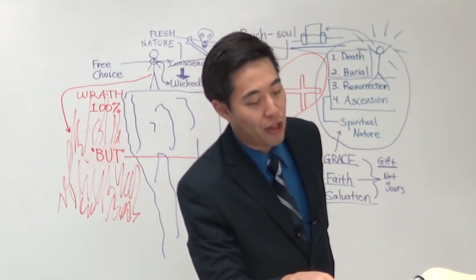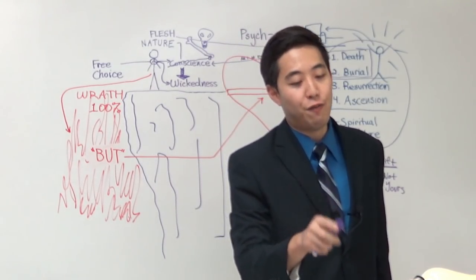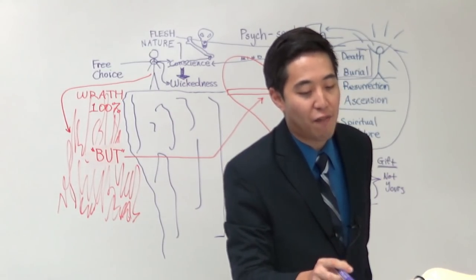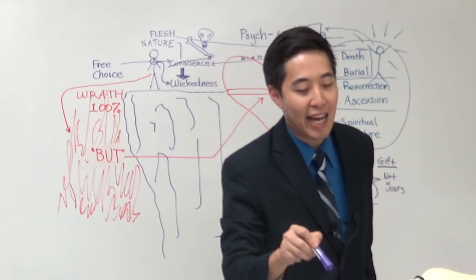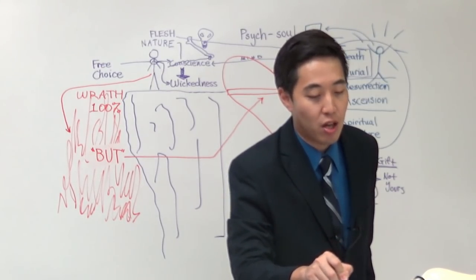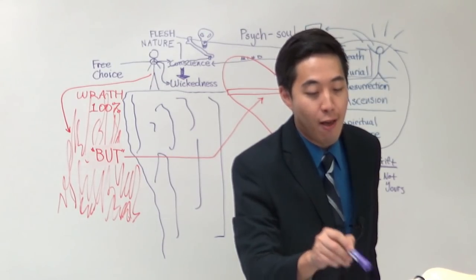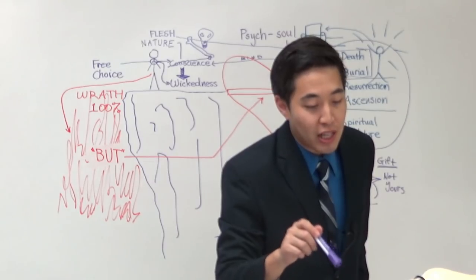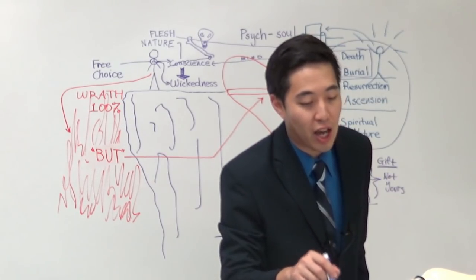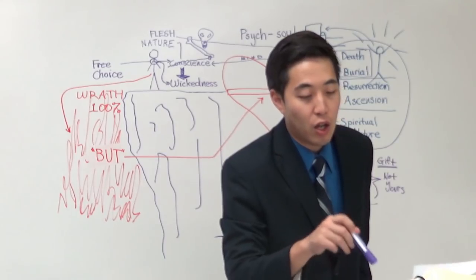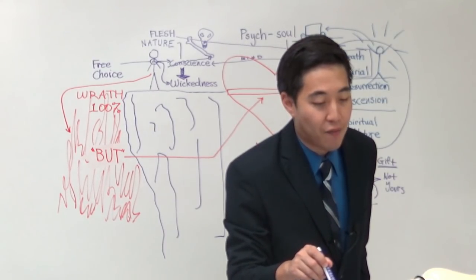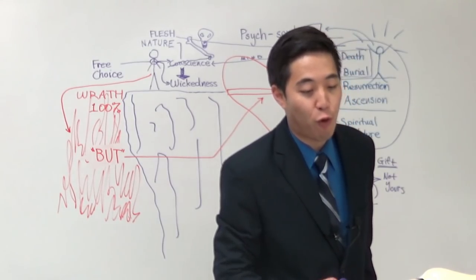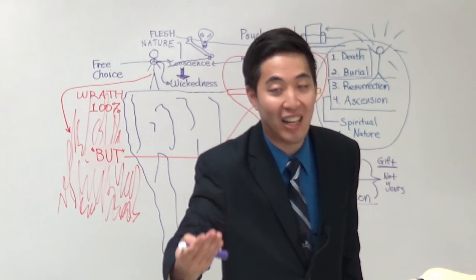Look, this is more simple than you think. You ready for this? Ephesians 2:9 cannot operate until it's based off of what? Verse 8. Grace, are ye saved through faith. What is that based on? His gift, right? What is that based on? That's based on verse 5. Even when we were dead in sins, hath quickened us together with Christ by what? Grace. Ye are saved. Based on what? Verse 4. But God who is rich in mercy for his great love wherewith he loved us.